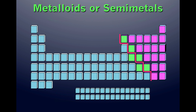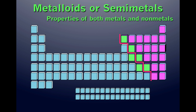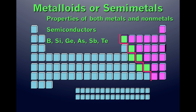The metalloids, or semi-metals, are located on the staircase. Metalloids have properties of both metals and non-metals — they are semiconductors. Silicon and germanium are very good semiconductors and are used in the computer industry. The six metalloids are boron, silicon, germanium, arsenic, antimony, and tellurium.